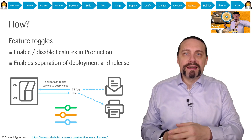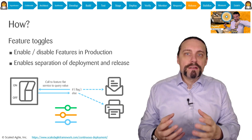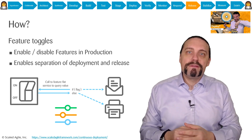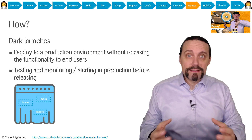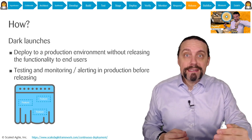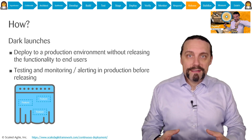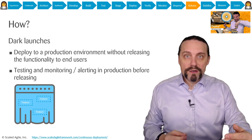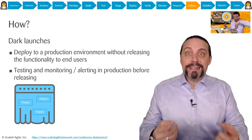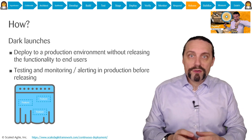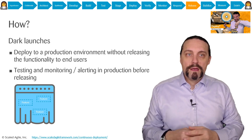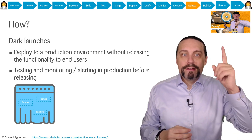A feature toggle is nothing else than an if statement. If the feature flag is on, then we send out an email; if the feature flag is off, then we print out something else. Thanks to feature flags we are able to continuously deploy into production without releasing the functionality to the users — this is called a dark launch. We deploy new functionality without releasing it to users, which enables us to already set up the whole monitoring and alerting, and see how our new code behaves in production.